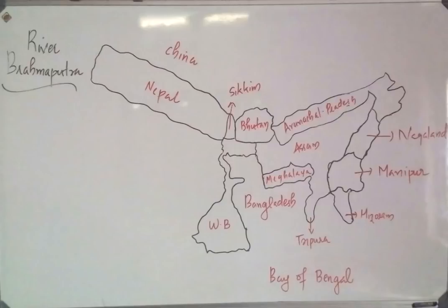Let's start with a gesture map. If you are interested in the Brahmaputra River, you will find a map covering Nepal, Bhutan, and Bangladesh. You will also find a map in India.